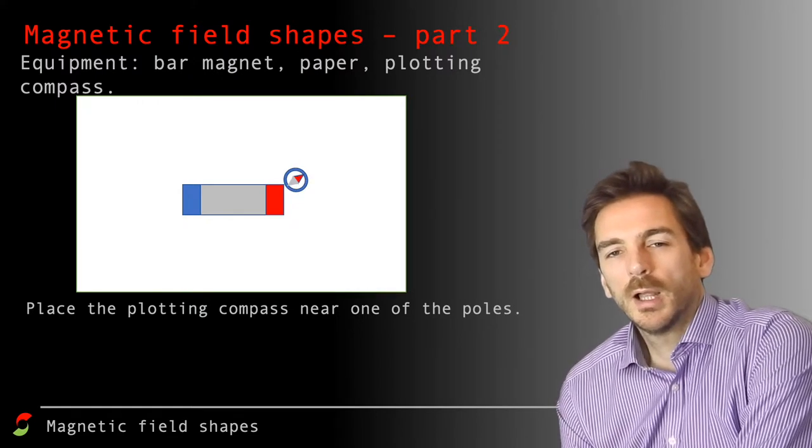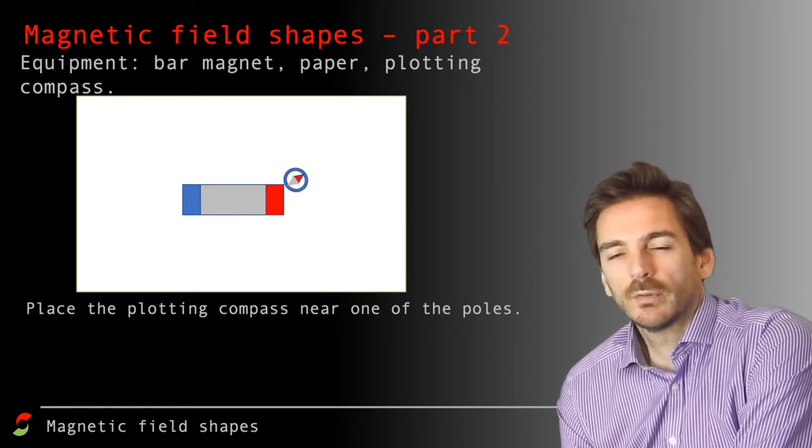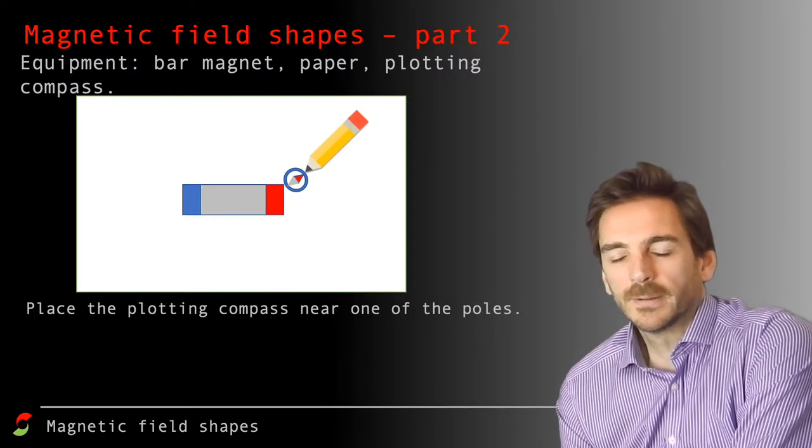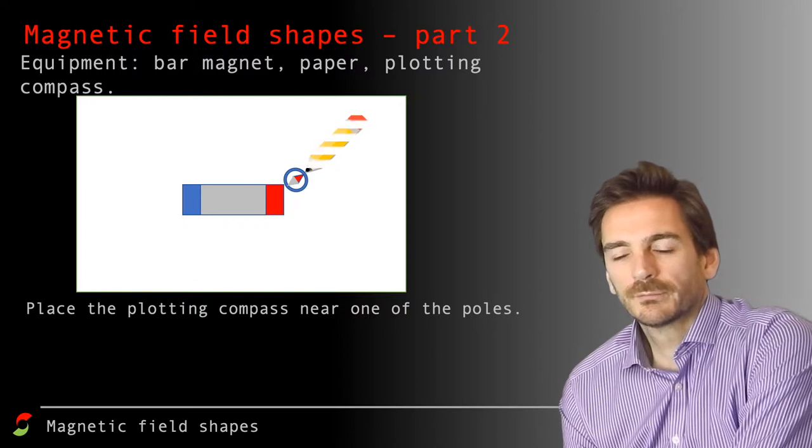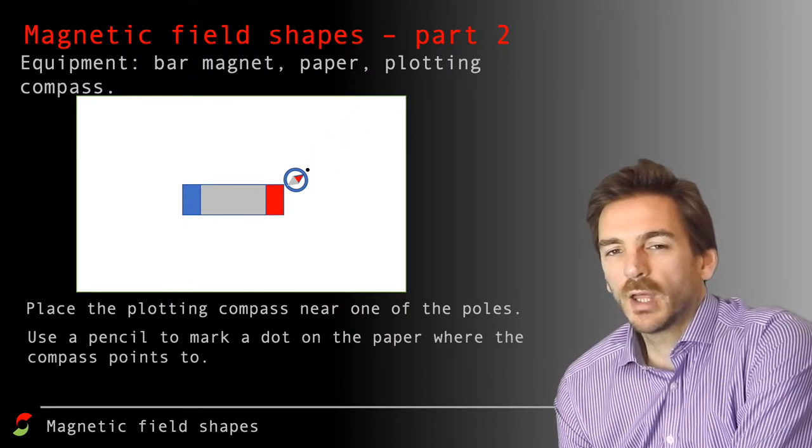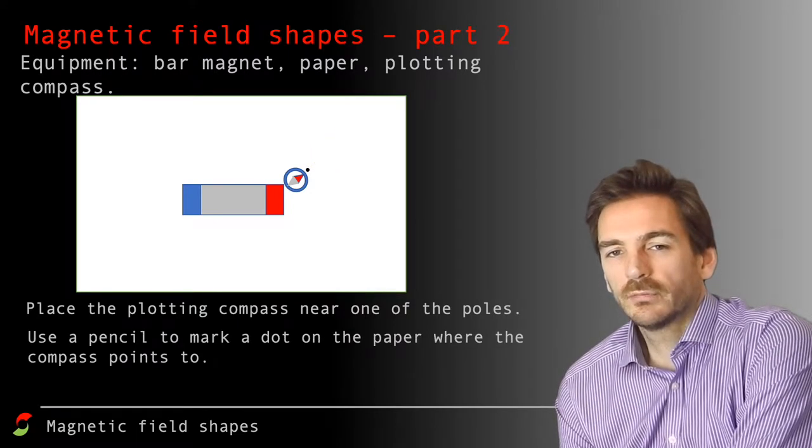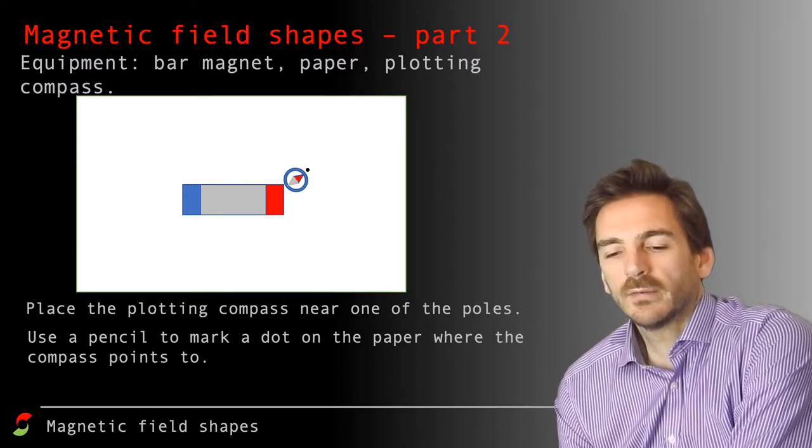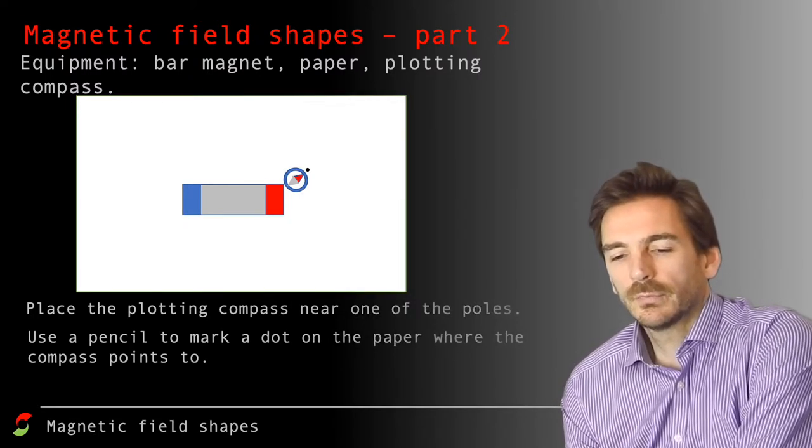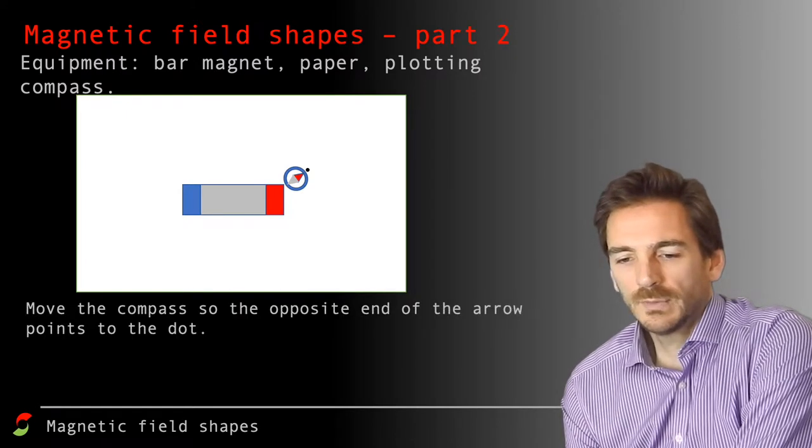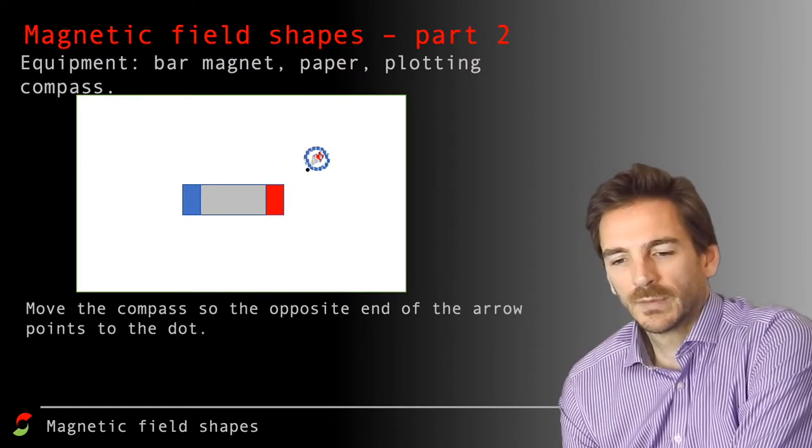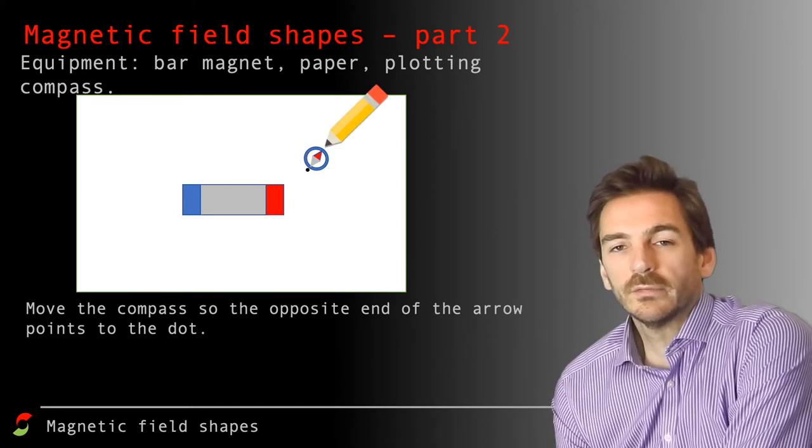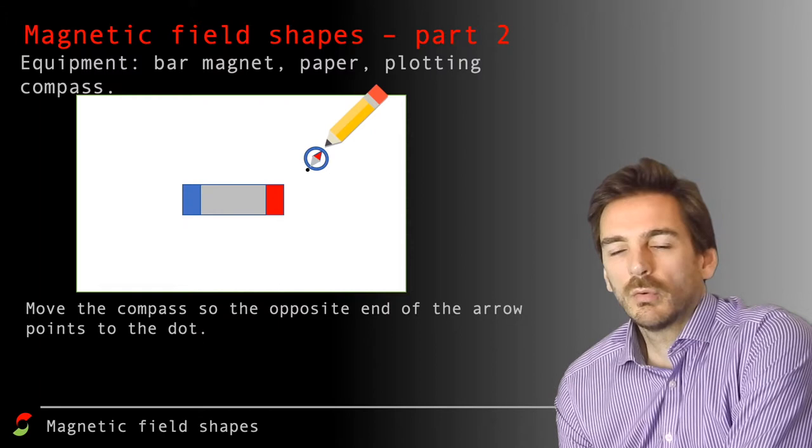What we notice is that the plotting compass will get affected by the bar magnet, it will line up along with the magnetic field lines. And what we do is use a pencil then to draw a dot where it's pointing, just like this. Then what we do is we move the plotting compass to that point and it will realign with the magnetic field. So move it and it gets realigned. And you repeat, you put a pencil dot where it's pointing to again, and you repeat that all the way around.